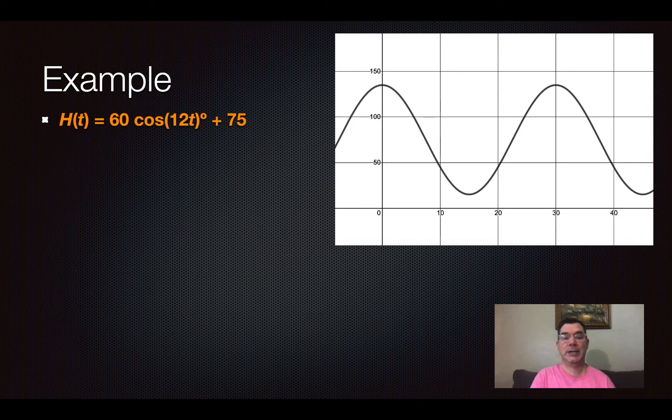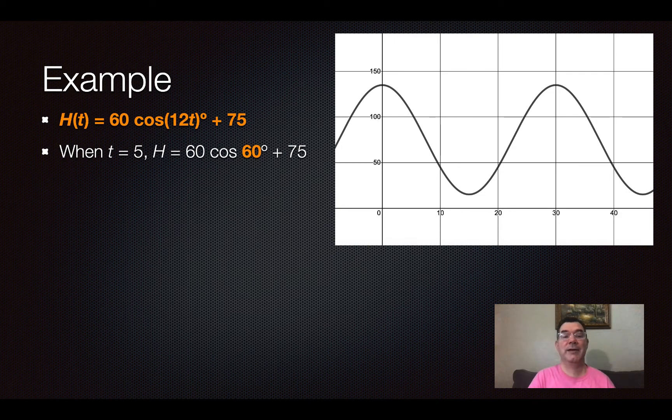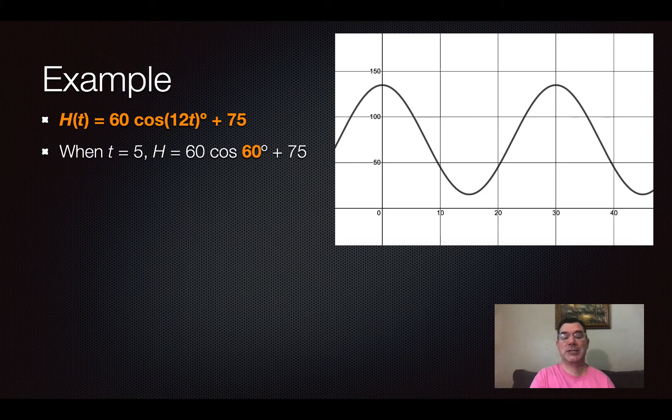So, there's my function again, I just copied it so that we could answer the first part. Well, when t equals 5, that 12t gets replaced with 12 times 5, which is 60 degrees.